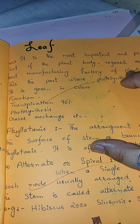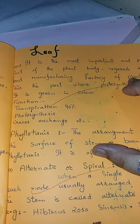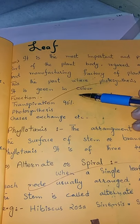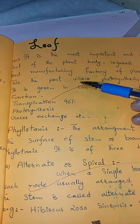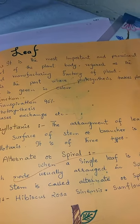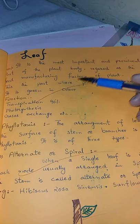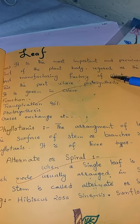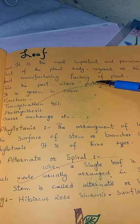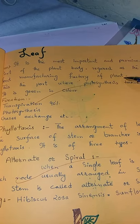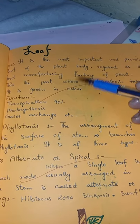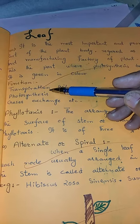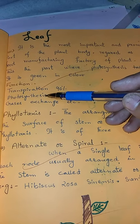Bismillahirrahmanirrahim, Assalamualaikum. Morphology and phytography of leaf. Leaf is a green part of a plant which is called the food manufacturing factory because it contains the photosynthetic material. The chief functions of leaf are mostly 90% leaf transpiration, photosynthesis, and gas exchange.